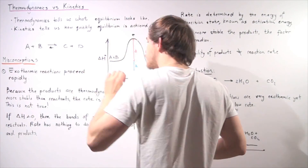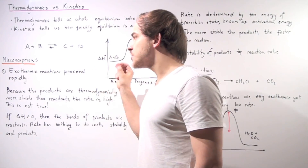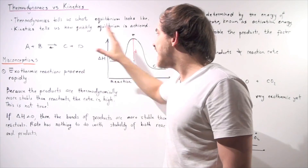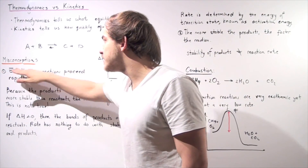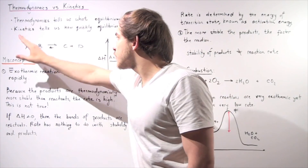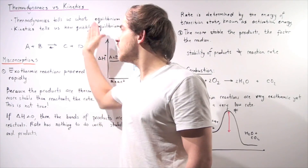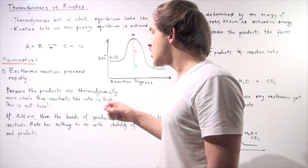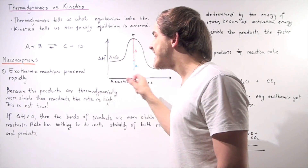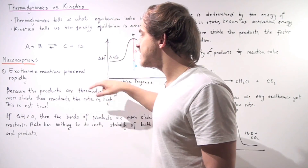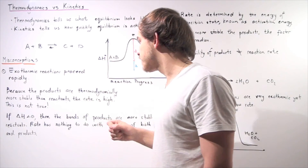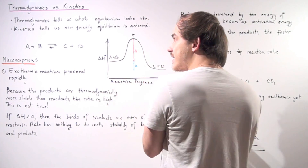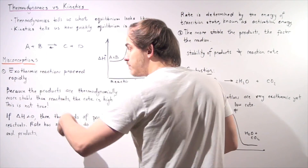Let's look at the first misconception: exothermic reactions proceed rapidly. This statement claims that because the reaction is exothermic, equilibrium will be achieved very quickly. Translated another way: because the products are thermodynamically more stable than the reactants, the rate is high. We're basically stating that thermodynamics is the same thing as kinetics — but it's not. So this statement cannot be true.